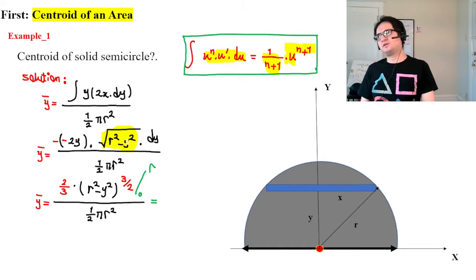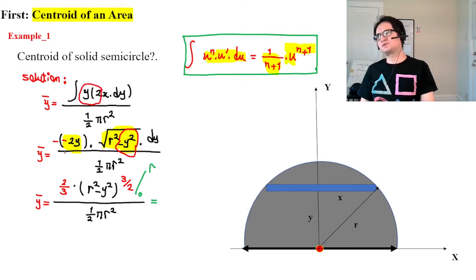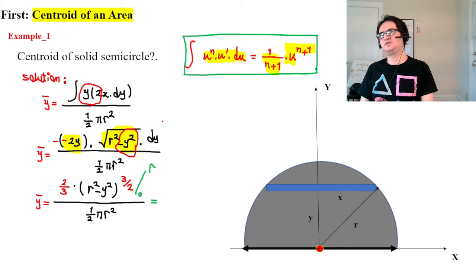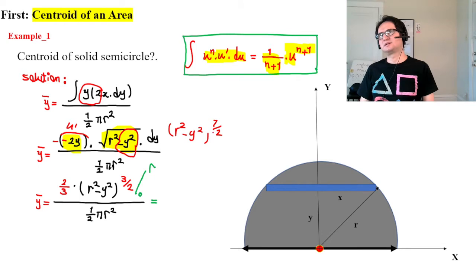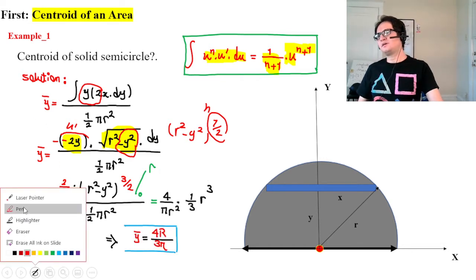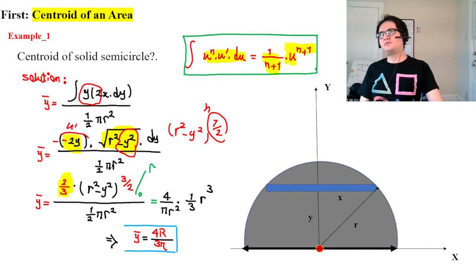Our u to the power of n term is (r squared minus y squared) and its derivative involves minus 2y. We can introduce a negative sign and cancel it, creating the form u-prime times u to the power of n, where u equals (r squared minus y squared) to the power of one-half. The integration then gives two-thirds times u to the power of (n+1), where one-half plus one is three-halves.